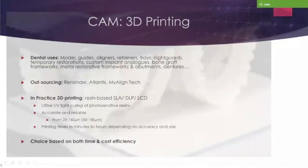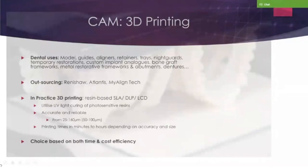In terms of 3D printing, this is what I'm more into myself at the moment. The dental uses for 3D printing include models, guides, aligners, retainers, trays, nightguards, frameworks, and temporaries. You can outsource some of the metal-based 3D printing to big companies like Renishaw and Atlantis for implant frameworks and bridge frameworks, MyAlignTech for Invisalign, or companies like IDDA or the DDA Lab who will make aligners for you. But you can also purchase in-house 3D printers.